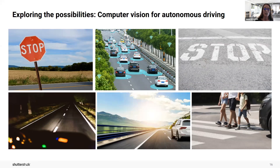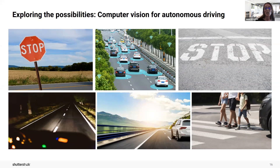In order to ensure that a car can identify a stop sign every time, this researcher would need lots of photos of stop signs to train their computers — photos with stop signs in the foreground or in the background, stop signs that are new with bright red color versus old faded stop signs, some that might be slightly obscured by trees, and stop signs drenched in rain.